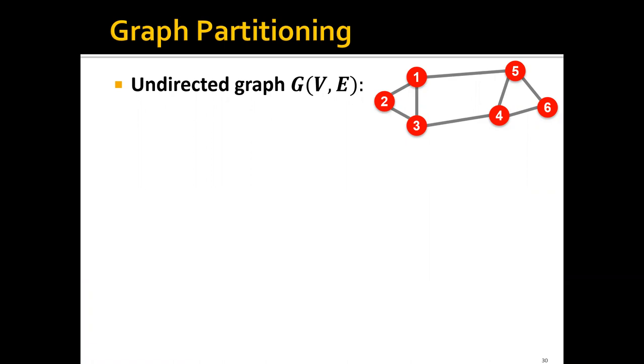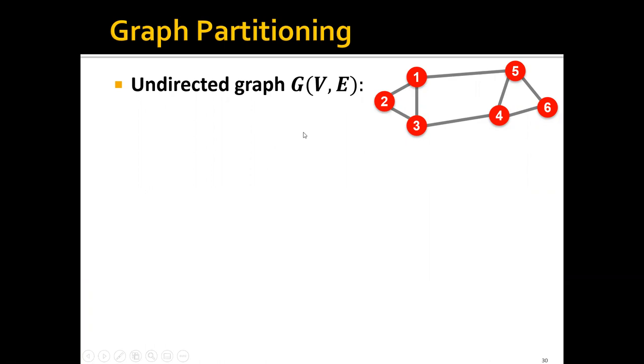Remember that community detection is essentially a graph partition problem. Let's say that we have the undirected graph G with the node set V and edge set E. In the bi-partitioning task, we want to divide the vertices into two disjoint groups A and B.